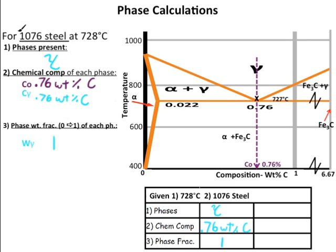Now that we've reviewed, let's try our first example problem. We are given for 1076 steel at 728 degrees Celsius: find the phases present, the chemical composition of each phase, and the phase weight fraction of each phase. We've already discussed that 1076 steel has the eutectoid composition of 0.76 weight percent carbon. Using our given conditions, we can see that we are at this x right here in the single-phase gamma region, so our phase present is gamma. Because it is a single-phase region, the chemical composition of gamma is the same as the overall composition, and the phase weight fraction is 1. I've compiled our data into a table here to better organize it.